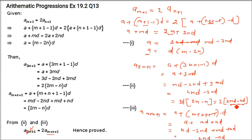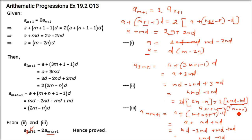So A sub (3m+1) is equal to twice of A sub (m+n+1). This is what we had to prove.